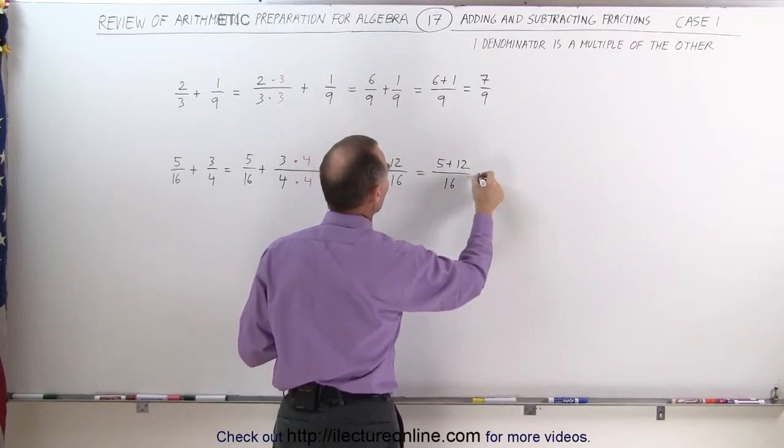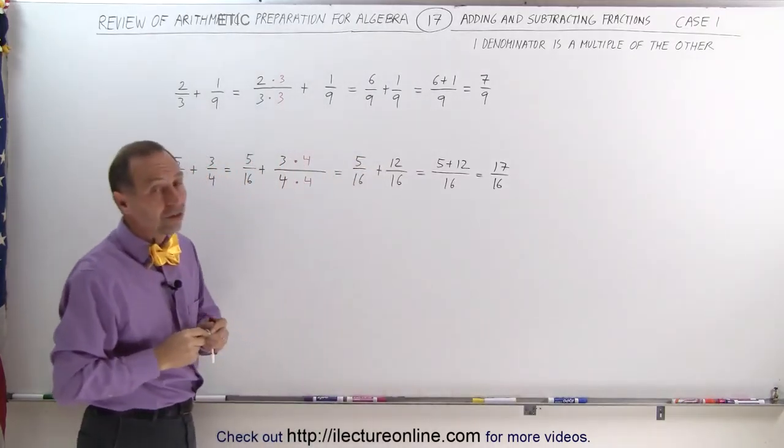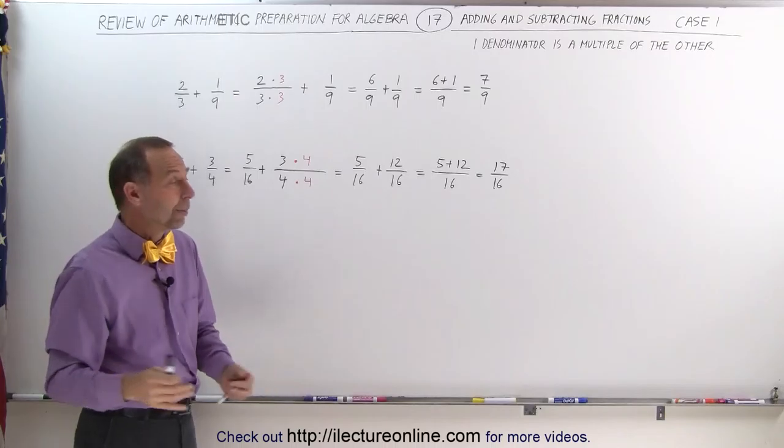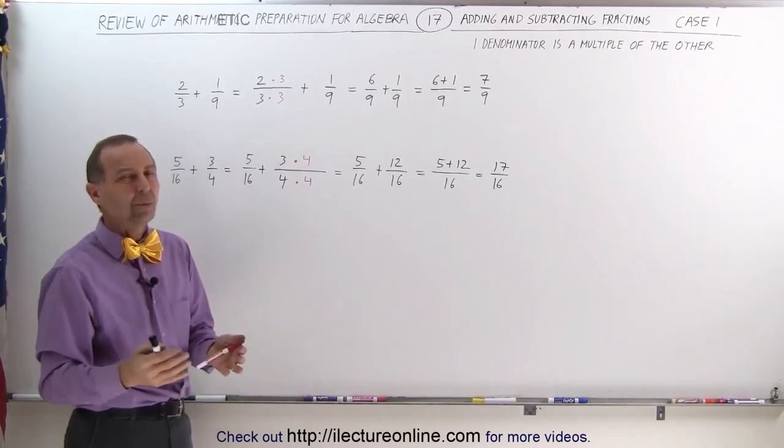That's the common denominator, which is 17 sixteenths. Notice it's an improper fraction. The numerator is larger than the denominator, but that's okay. I can leave it like that or I can write it as a mixed number. It doesn't really matter.